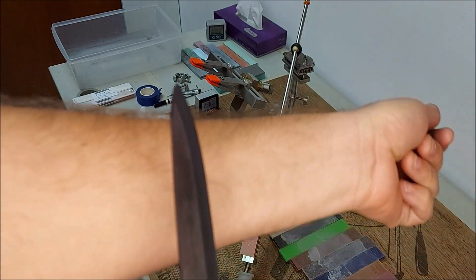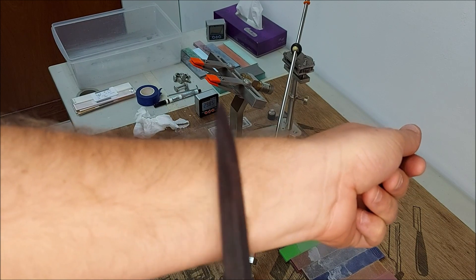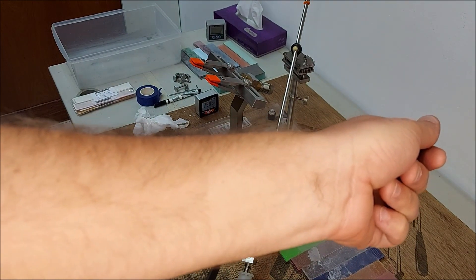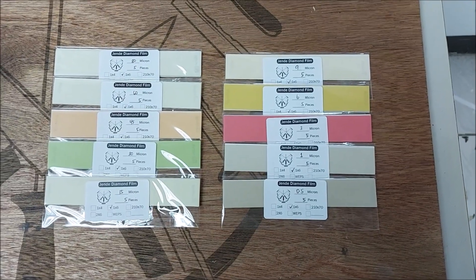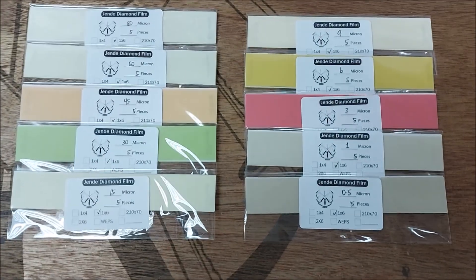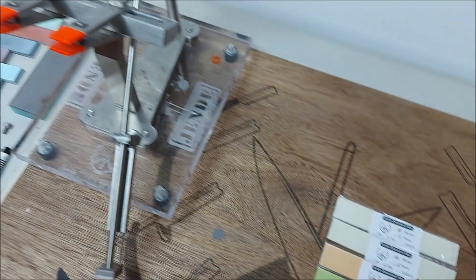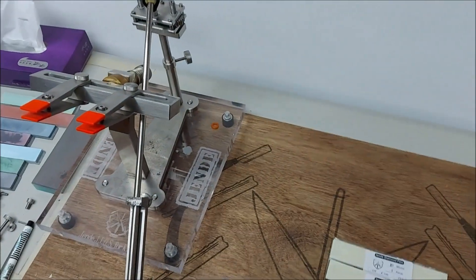Yeah, all right, we'll do a gratuitous arm hair shave here. There you go, missing hair. Hi everybody, Tom Blodger from Jende Industries, and today we're going to show you the Jende Diamond Films 1x6 using the JIGS for Knives, and we're going to sharpen a ceramic knife with chips.